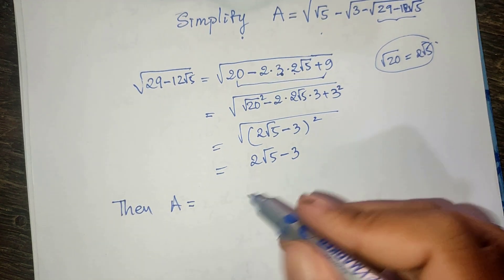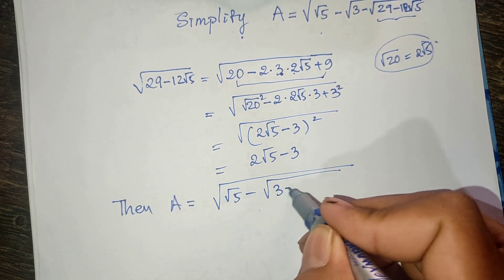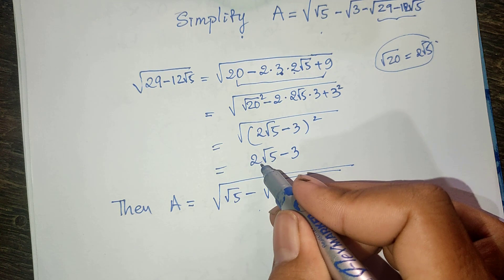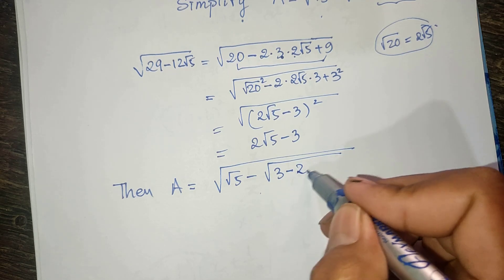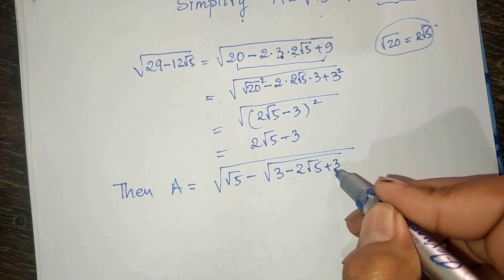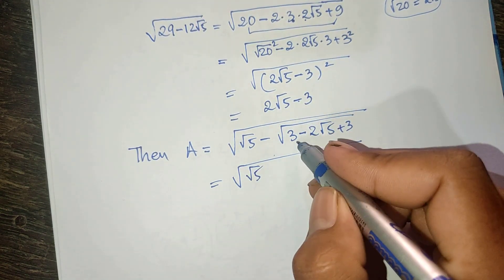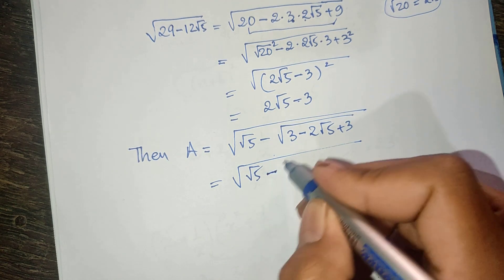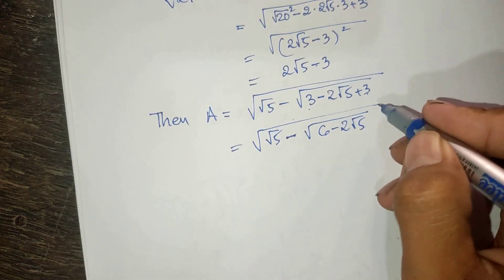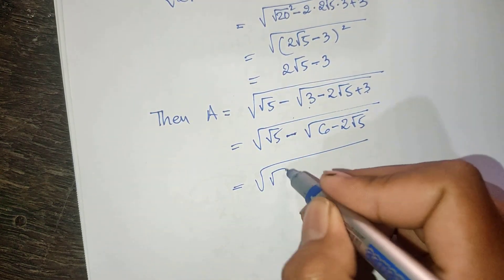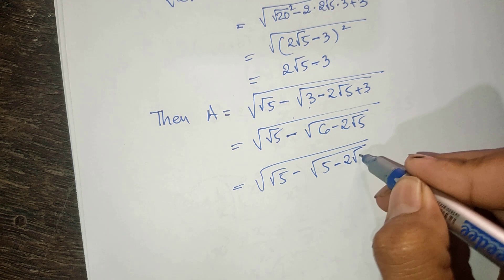Now we substitute back: A equals square root of 5 minus 2 square root of 6, where the inner radical is replaced by 2 square root of 5 minus 3. This gives us square root of square root of 5 minus square root of 3, and simplified further we get square root of 6 minus 2 square root of 5.